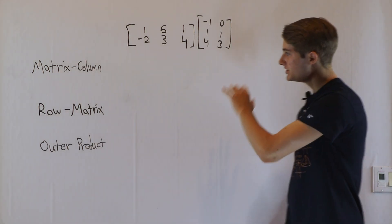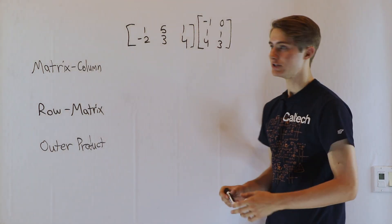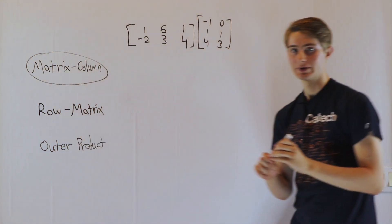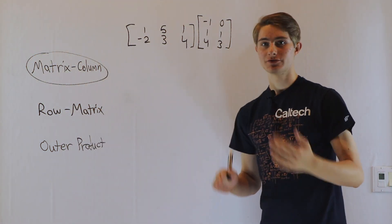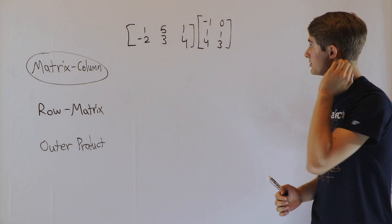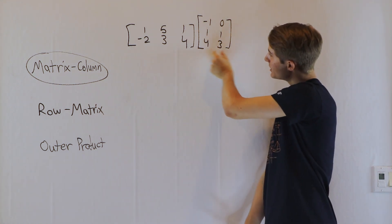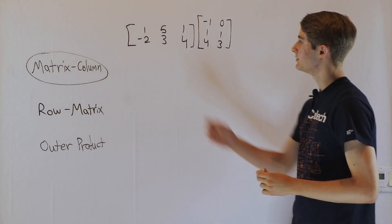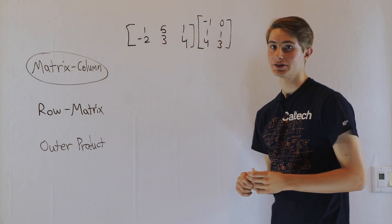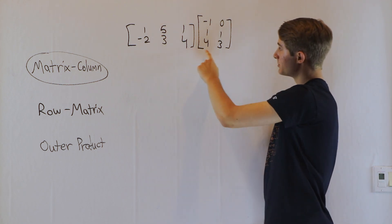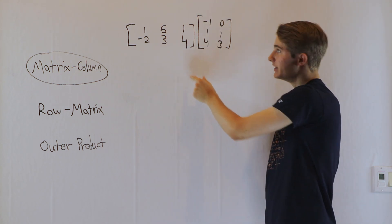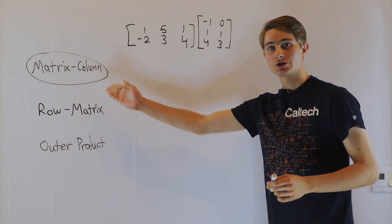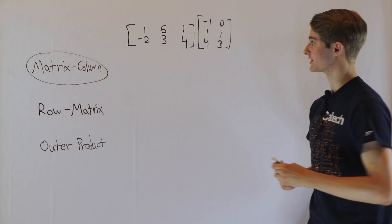We are going to talk about three different representations of the matrix product, starting with the matrix column representation. In my first video talking about what a matrix represents, I talked about thinking about the different columns of a matrix as separate vectors, so that when we multiply two matrices together, we just multiply the first matrix by each column and put them together. That is exactly what the matrix column representation of the product is.